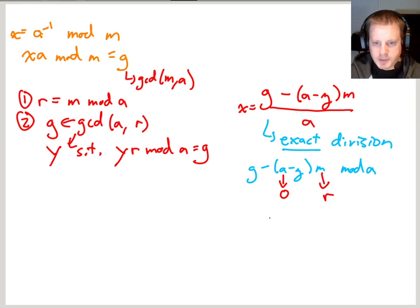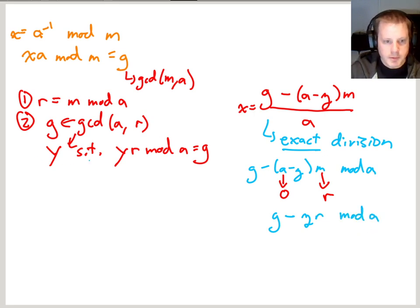And so now what this becomes is just g minus y times R mod A. And what can I do with this? Well, remember the, what's guaranteed for my recursive call is that y is the inverse of R mod A. So that means that y R mod A, that is just g. Because of what we know from the fact that y got returned from this recursive call. And so that means this whole thing just becomes g minus g mod A. So it's zero mod A.